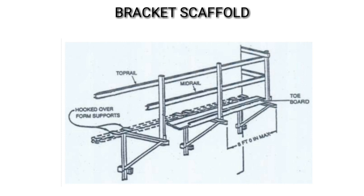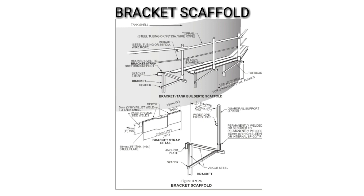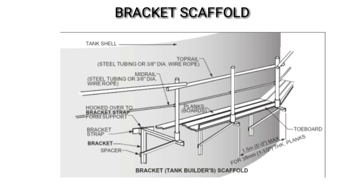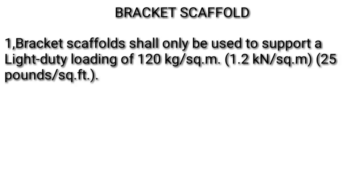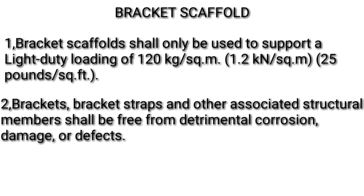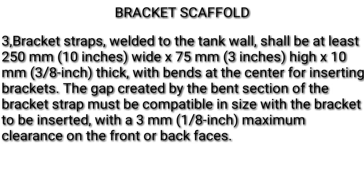Bracket scaffold. 1. Bracket scaffold shall only be used to support a light duty loading of 120 kilograms per 1.2 square meters (25 lb per square foot). 2. Brackets, bracket straps, and other associated structural members shall be free from detrimental corrosion, damage, or defects. 3. Bracket straps welded to the tank wall shall be at least 250 mm (10 inches) wide by 75 mm (3 inches) high by 10 mm (3/8 inch) thick, with bends at the center for inserting brackets.